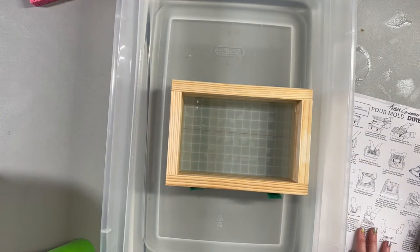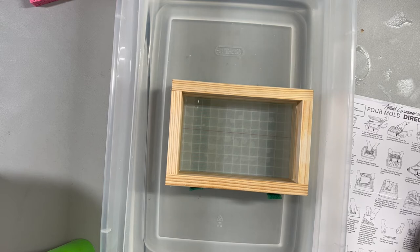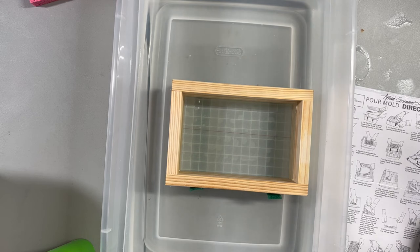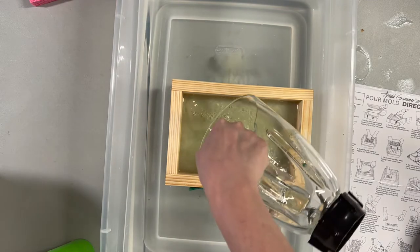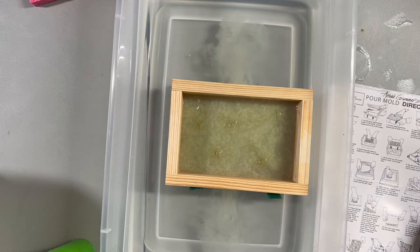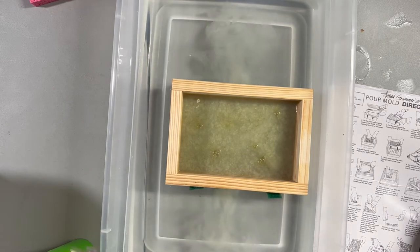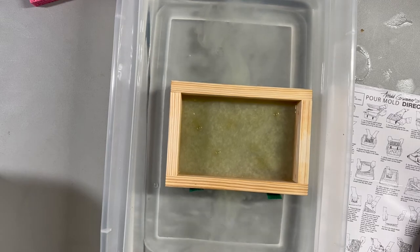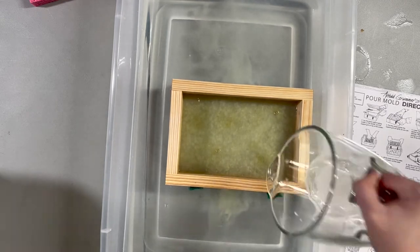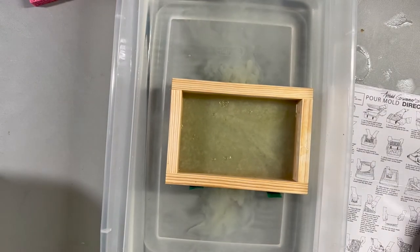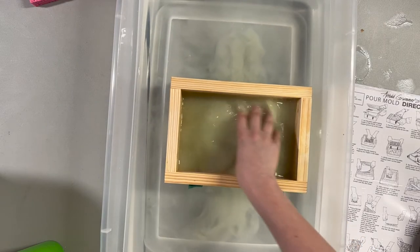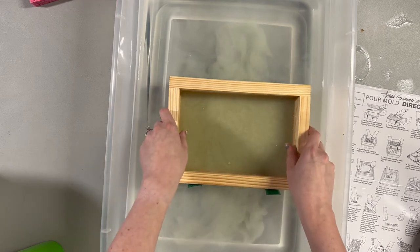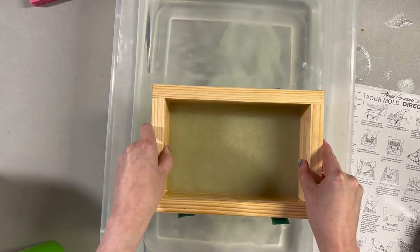Okay, next we take our blended pulp and pour it into the mold. So let's see. Oh, that is a disgusting color. Get a little water and rinse out the rest of the pulp in here. Okay, and it says spread the pulp evenly by wiggling your fingers in the water and lift the mold out of the water holding it level and let the water drain.